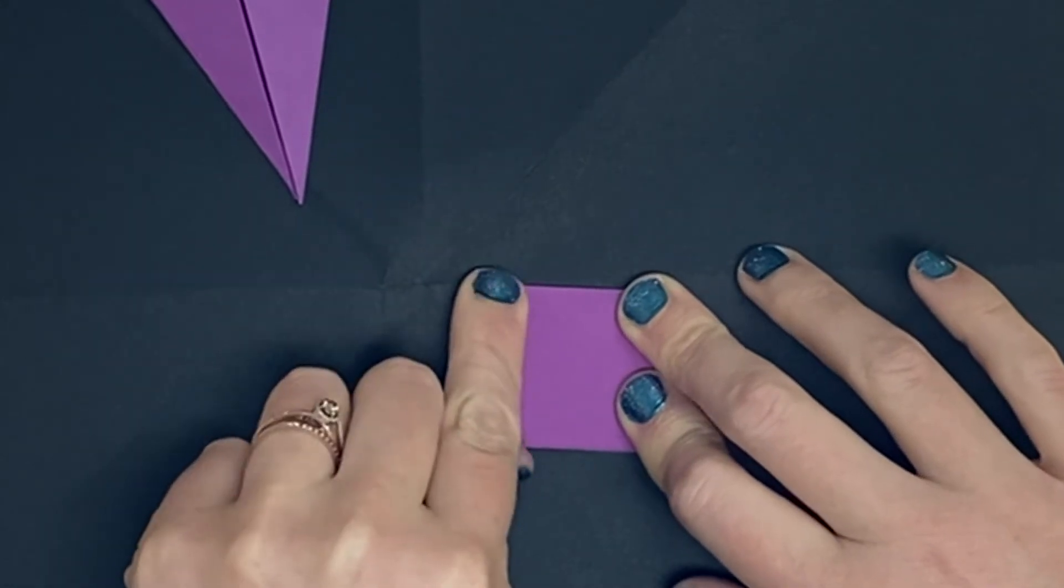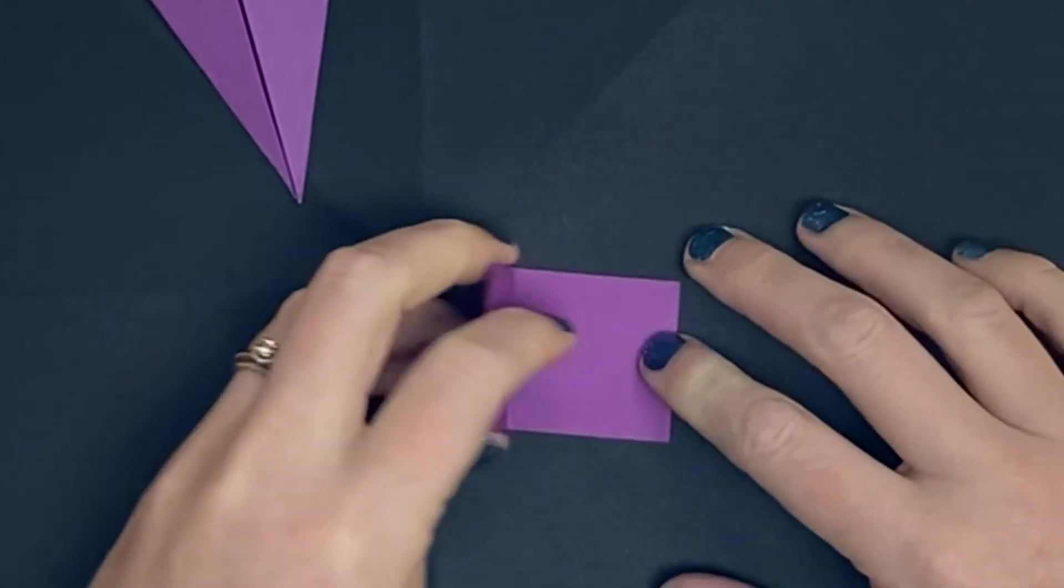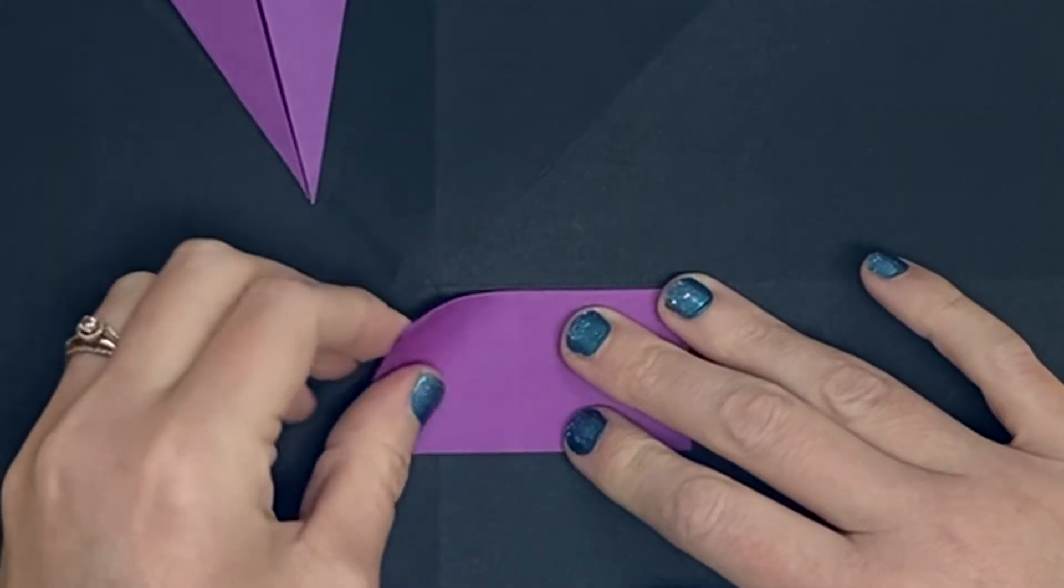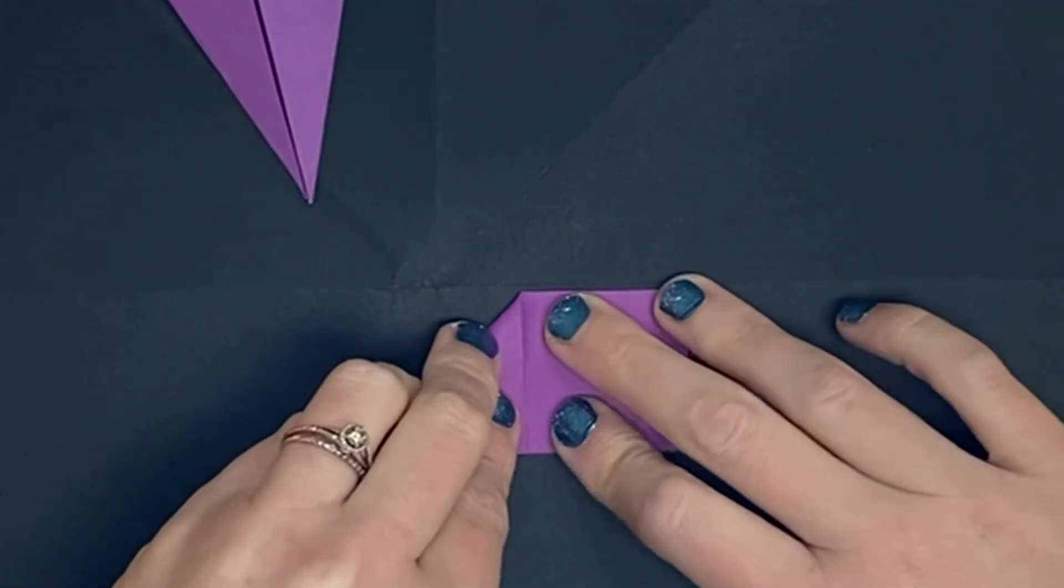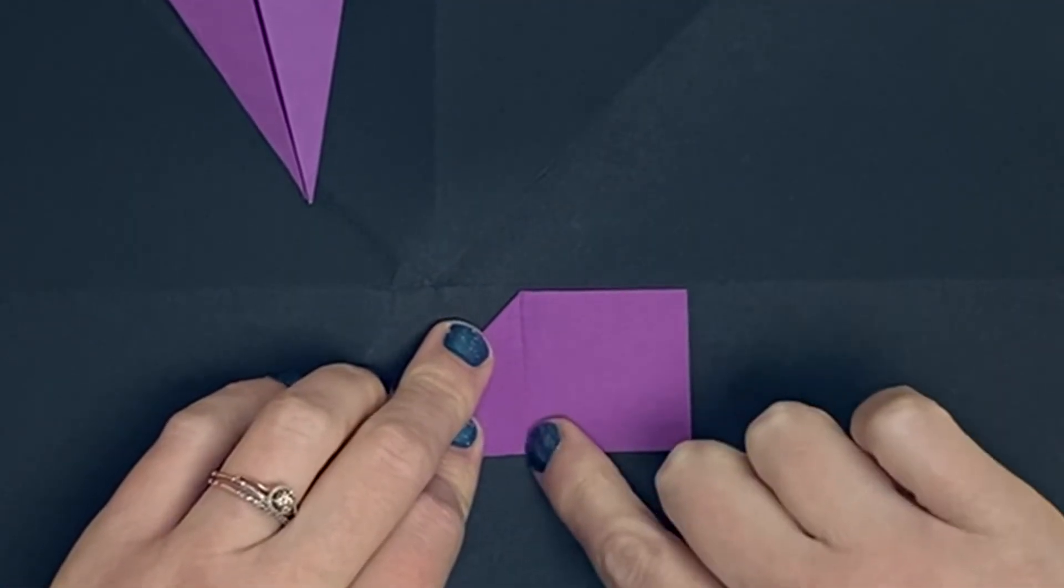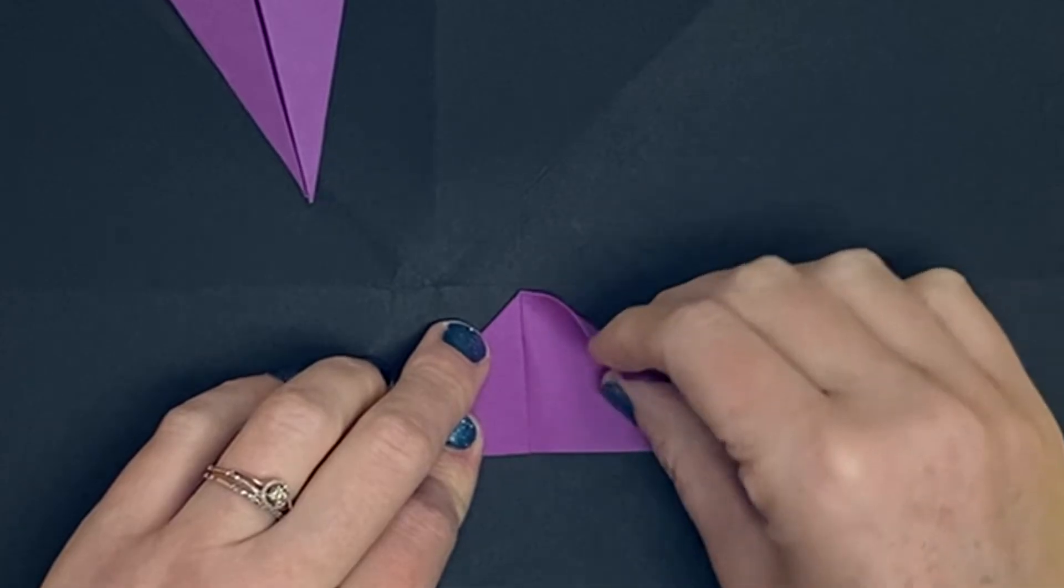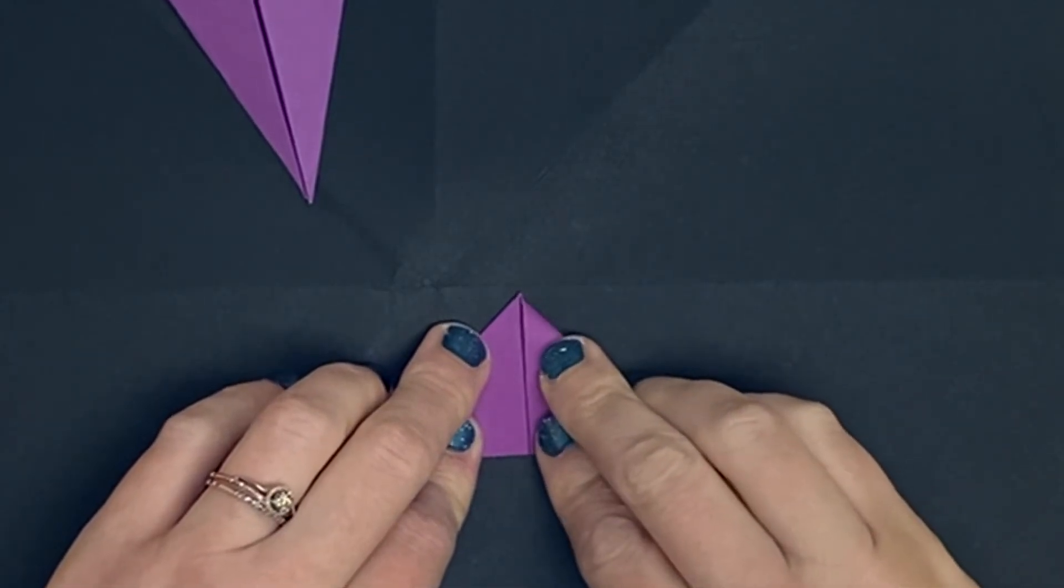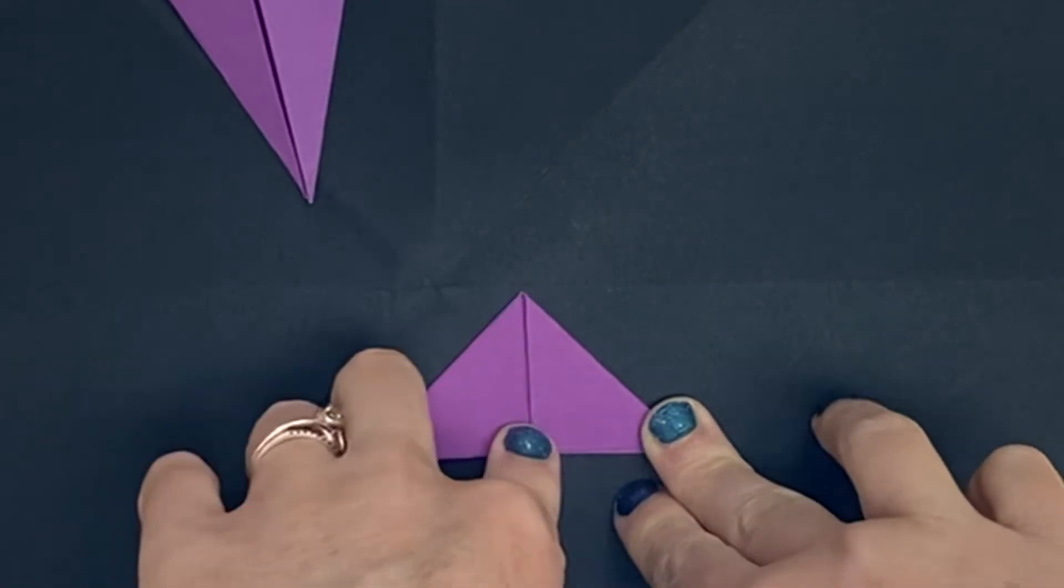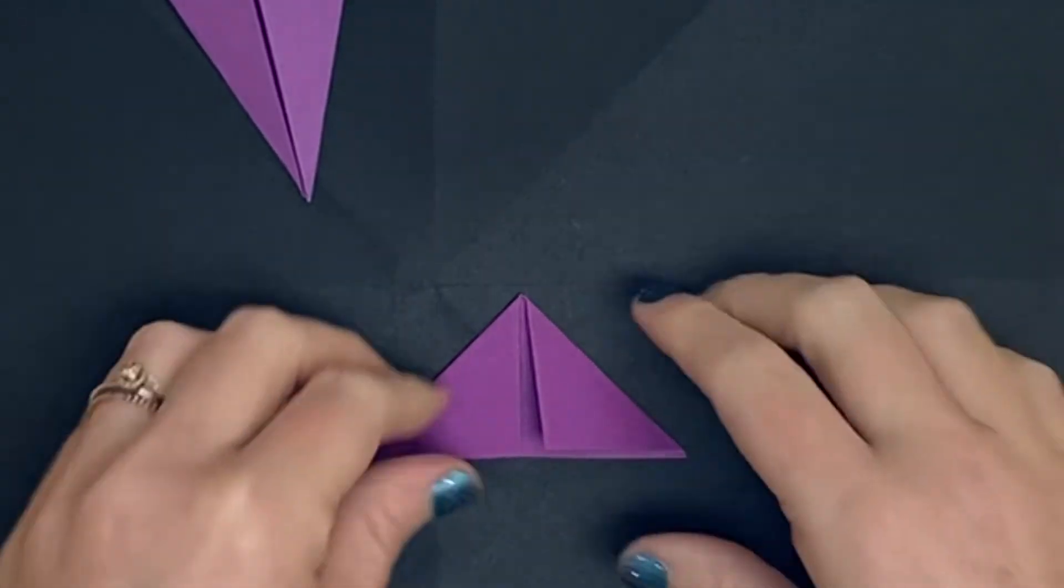Open it back up just one time and take that top line and fold it into the vertical line in the middle. Do the same on the other side. Take that top line and fold it so it meets with the vertical line in the middle and press it, crease it and now our hat fold is finished.